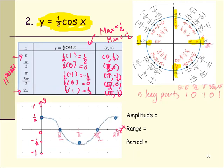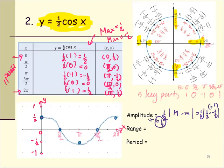The amplitude equals one half of the absolute value of the maximum minus the minimum. The maximum is one half and the minimum is negative one half, so one half minus negative one half equals one, and multiplying by one half gives amplitude equals one half. The range is the interval from negative one half to positive one half.